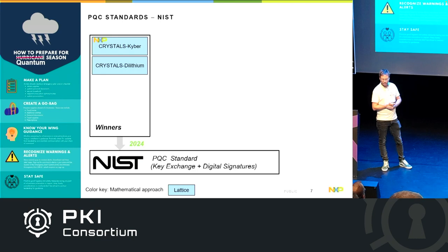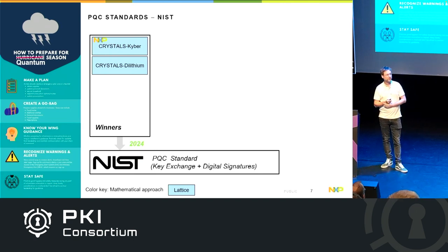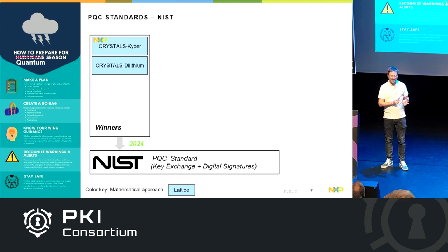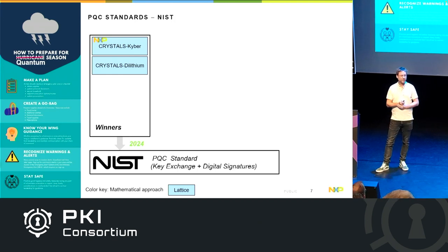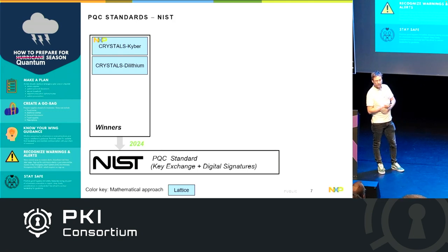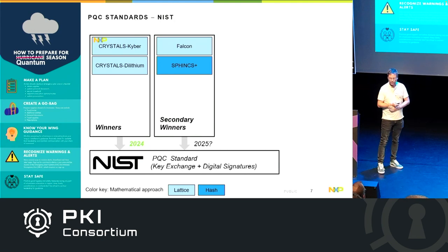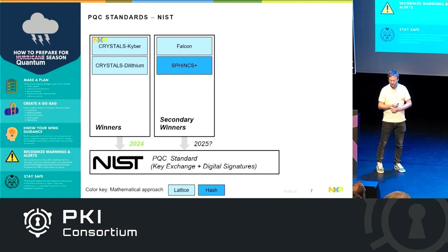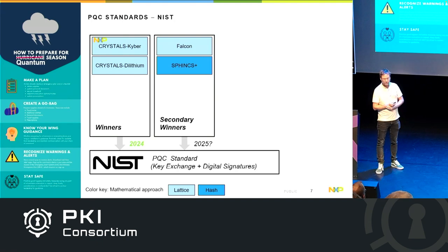We have NIST running the standardization. It's important because when I talk to customers there's a lot of confusion — even though NIST is a US organization, this is really considered by industry to be a worldwide standard, not just an American one. Just like AES and SHA-3 are not considered US-only standards. We have our two main algorithms: Kyber and Dilithium — the recommended algorithms — and then Falcon and SPHINCS+, which will also get standardized. Our main focus is on Kyber for key exchange and Dilithium for digital signatures.